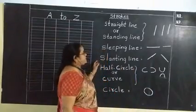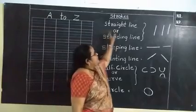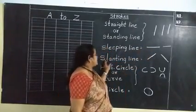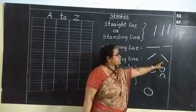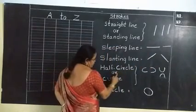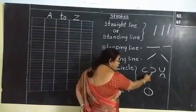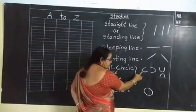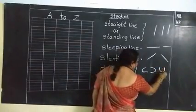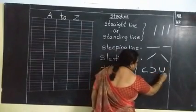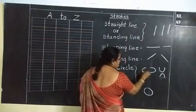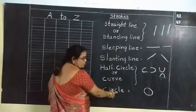Already you learnt in nursery class about the strokes. This is straight line or standing line, sleeping line, standing line, slanting line, right slanting line and left slanting line. Half circle or curve, right half circle, left half circle. Up curve and down curve. Next one is circle. What is this? Circle.